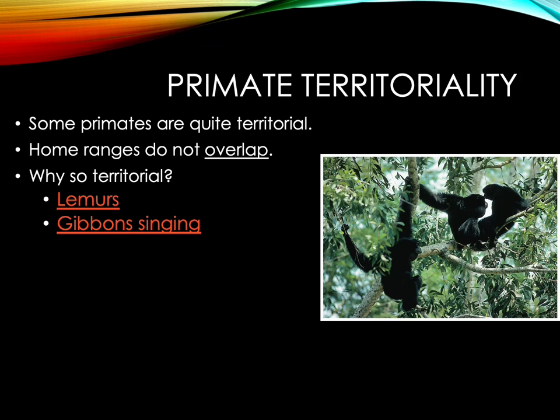Ranging behavior and territoriality vary considerably in primates. Some primates, like gibbons, have defined home ranges that do not overlap with other gibbons. The boundaries of their home ranges are the same as their territories, and they aggressively defend these territories through aggression and vocal duets performed by the pair-bonded male and female. Territorial behavior is best explained as a tactic by which primates defend access to two important but sometimes limited things: access to mates and resources.